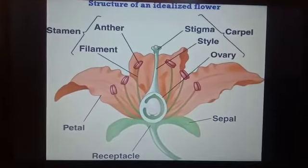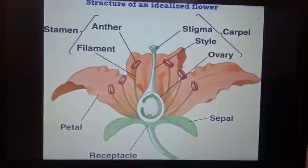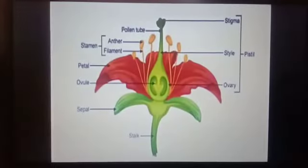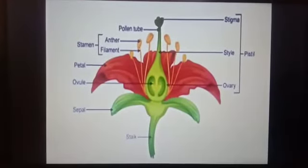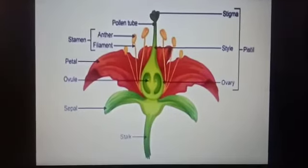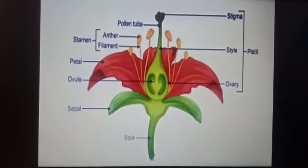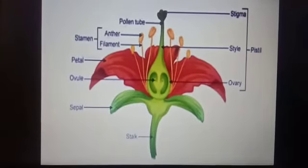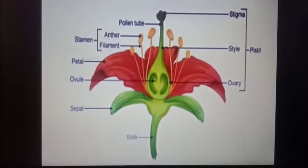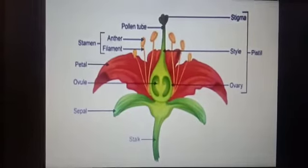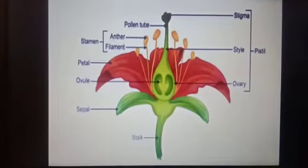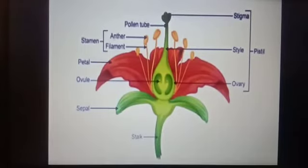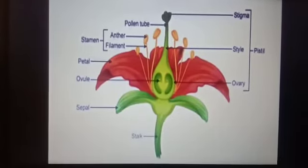The next part is the pistil, which is the female reproductive organ of a plant. The pistil is made up of three parts: stigma, style, and ovary. The top part of the pistil is the stigma. The middle part is the style, which is a tube connecting the stigma to the ovary. The swollen bottom part is called the ovary. The ovary makes and stores ovules, which contain the female gametes of the plant.